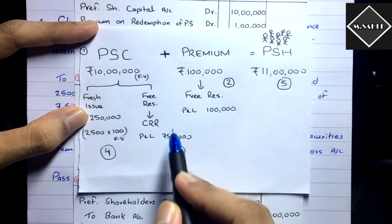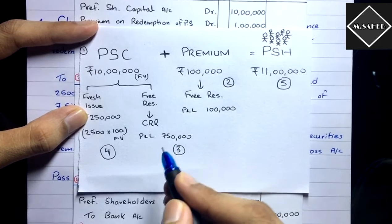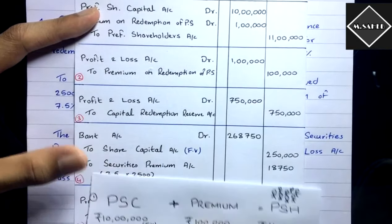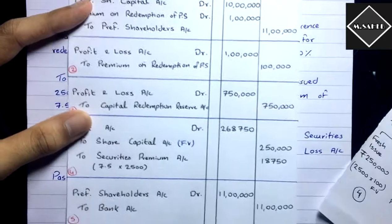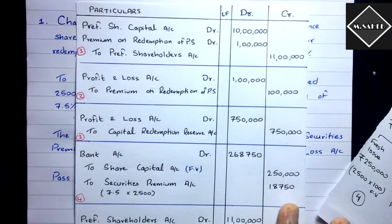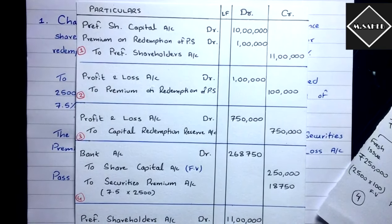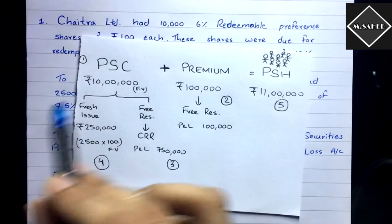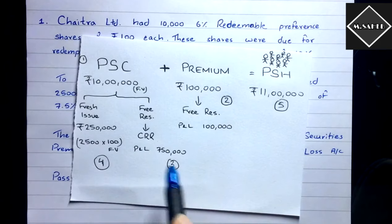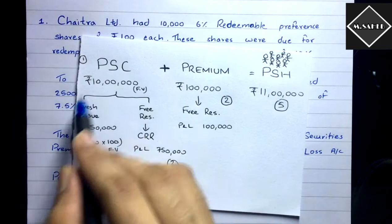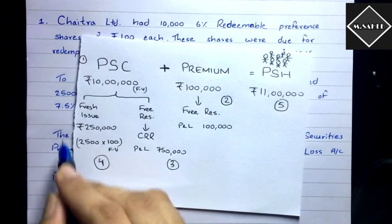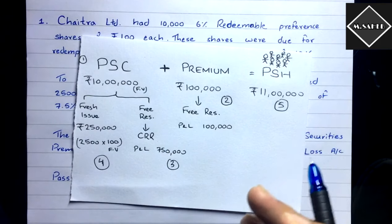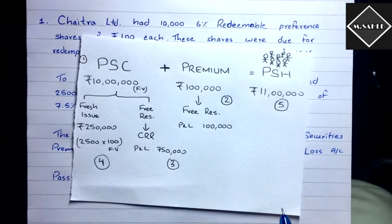So the five entries in sequence are: (1) Due entry, (2) Arrange money for premium, (3) CRR transfer entry, (4) Fresh issue of equity shares, and (5) Payment to preference shareholders. Always do the equation and the capital replacement calculation first before writing journal entries — don't jump directly to entries or you'll make mistakes. In the coming videos we'll solve more problems and also prepare the balance sheet.